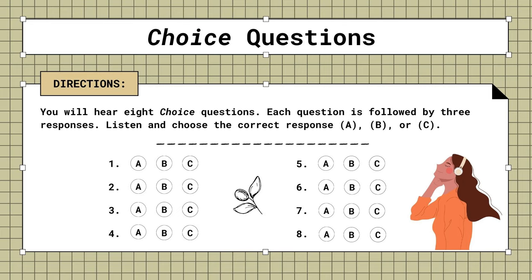7. Did you choose the large office or the office with a window? A. It was a hard choice. B. The one with a view. C. That would be great.